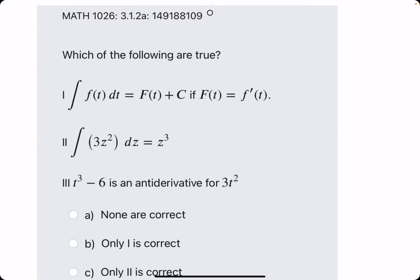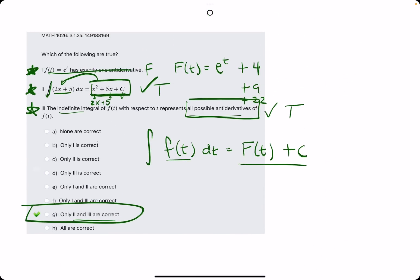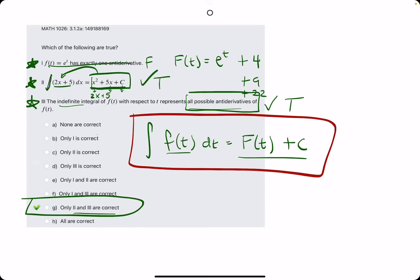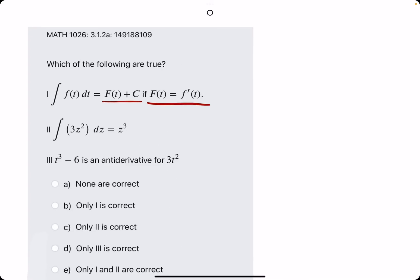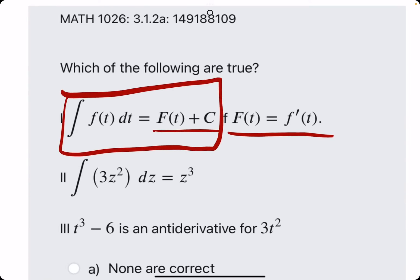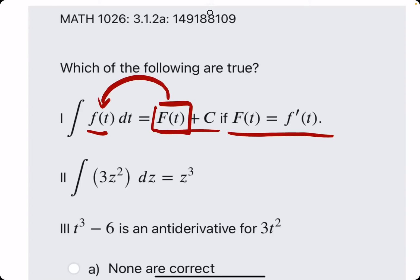Number one. We have the antiderivative of f(t) dt equals capital F(t) + C. Okay, so far, this is looking pretty good because I think I wrote that exact thing right here. So, the integral, the indefinite integral of f(t) dt is equal to capital F(t) + C. Then, they say, if capital F(t) is f'(t), lowercase f prime of t. Let's think about what this means. Looking back at this, we kept saying that we're finding the antiderivative capital F(t) of the lowercase f(t).